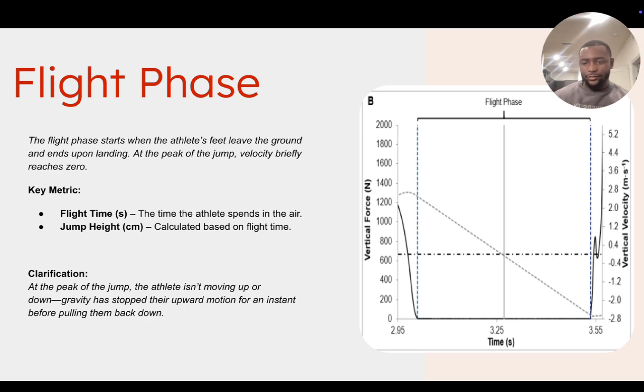So that's the flight phase. At the peak of the jump, the athlete isn't moving up or down. Gravity has stopped their upward motion for an instant before pulling them back down. So now gravity is working against the body, and that's why I spoke about earlier, like a lot of the counter movement jump and force plates, the Newtonian physics, like, the laws govern it.